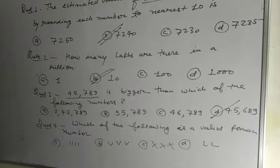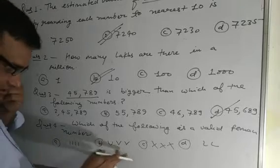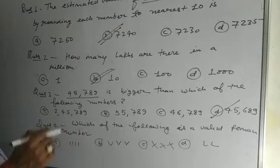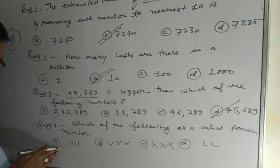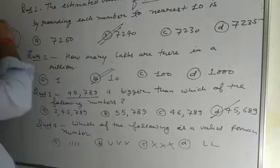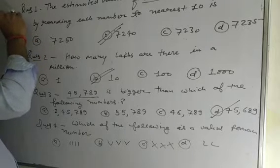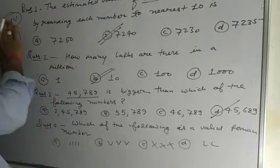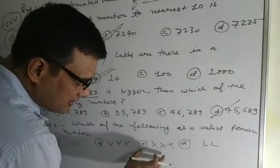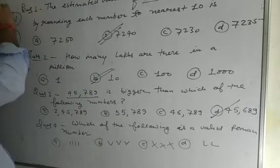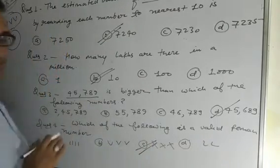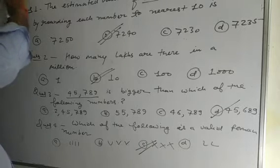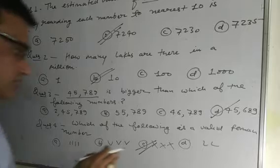Question number 4. Which of the following is a valid Roman numeral? The four options are: 4I, 3B, 3X (XXX), and 2L. We cannot repeat I more than three times, so the first option with 4I is wrong. B contains an invalid character. For option C, XXX repeats X exactly three times, which is allowed — the maximum repetition for X is three times. For option D, L cannot be repeated. Therefore, option C (XXX) is the correct answer.